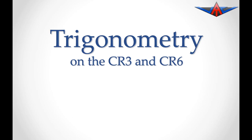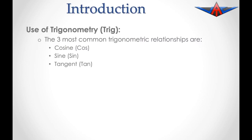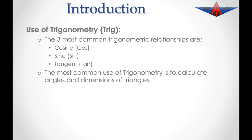This video looks at using trigonometry on the CR3 and CR6 navigation computers. The three most common trig relationships are cosine, sine and tangent. In normal mathematical calculations, the most common use of trigonometry is to calculate angles and dimensions of triangles.